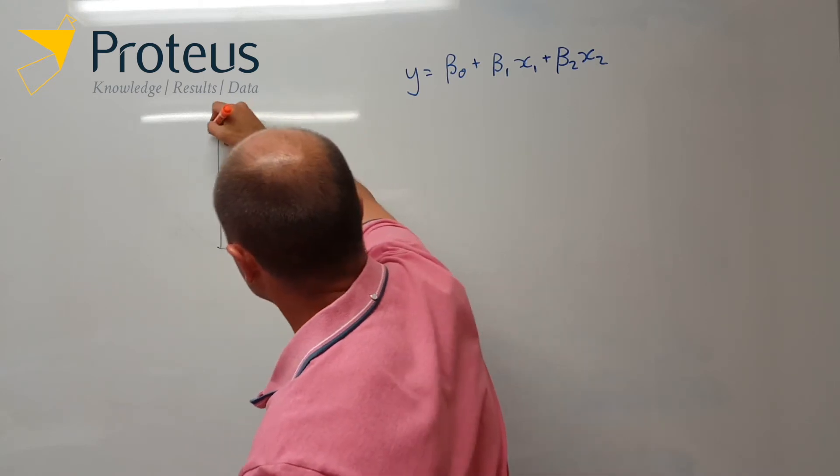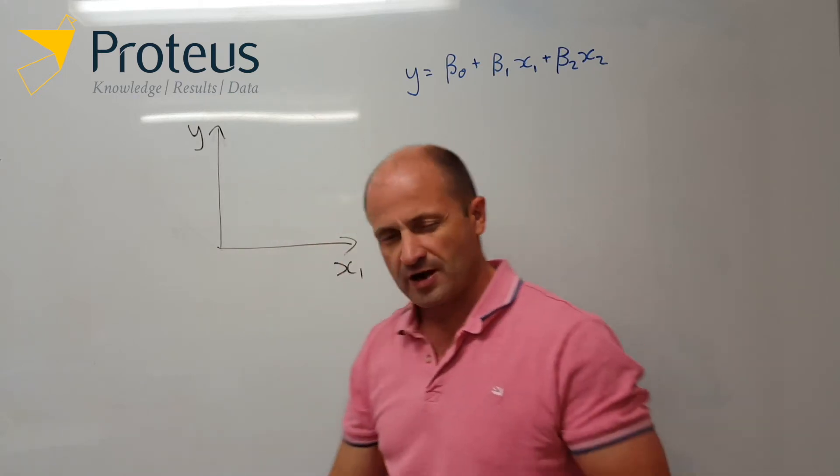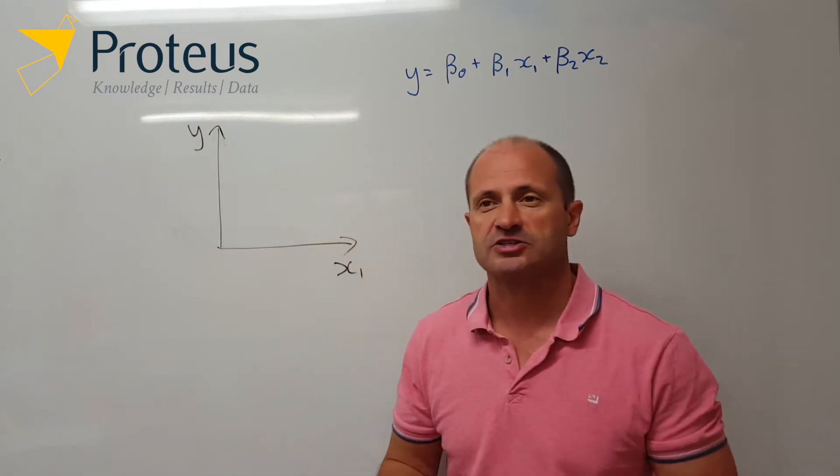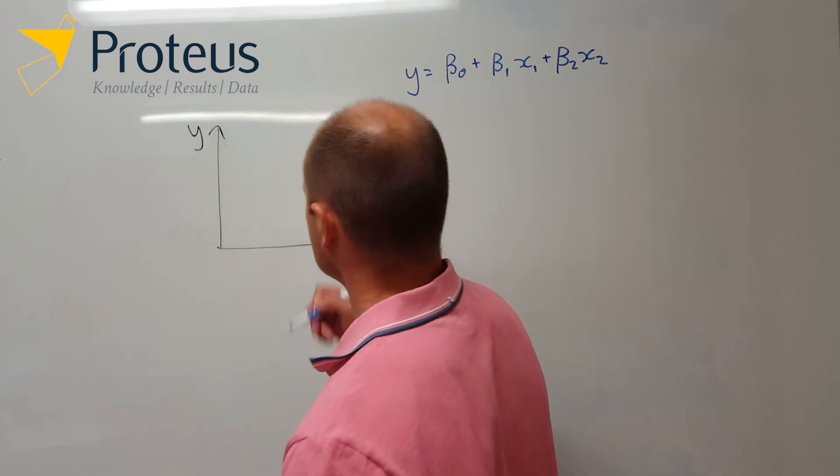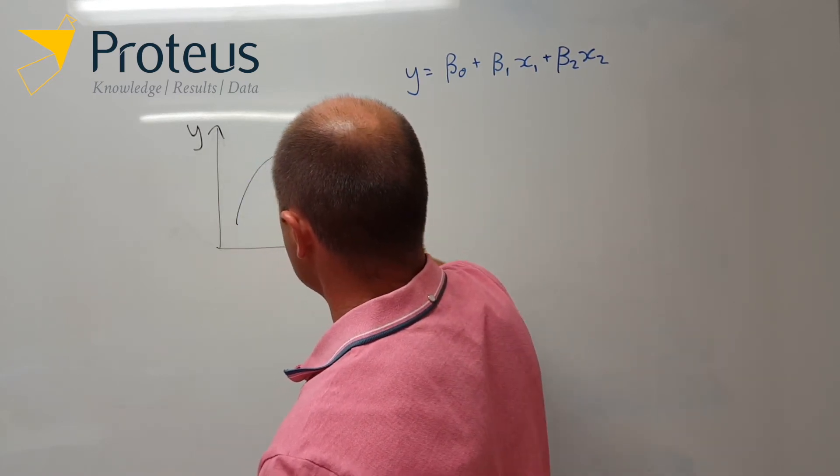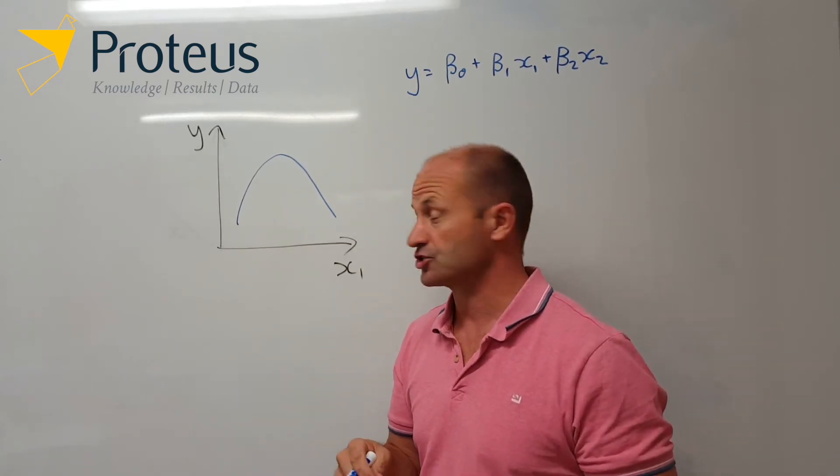One way of describing this idea that there's this sort of optimal set of conditions for a species, there's some sort of perhaps quadratic type relationship. Or some sort of concave down type relationship.